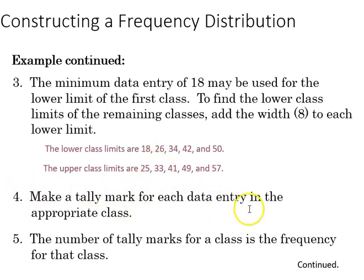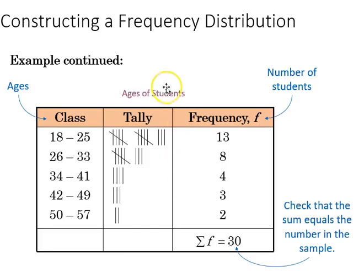We would then make a tally mark for each of the data entry in the appropriate classes, summarize those tallies by adding them together. Here's what that looks like, and we see that the majority of people in this class are between the age of 18 to 25, which is the traditional age of college students, and then we have a few that are older and it trails off in a very skewed direction, meaning progressively smaller. At the end we have the sum total, which is the sum of all the frequencies, 30 students in the class.